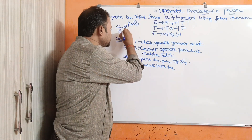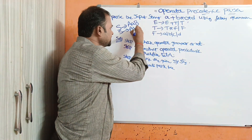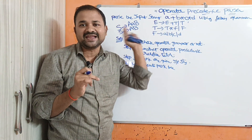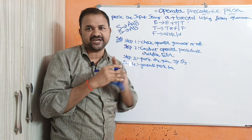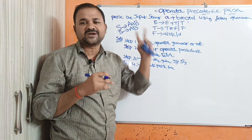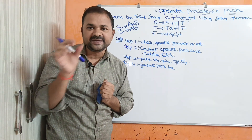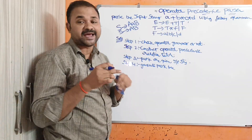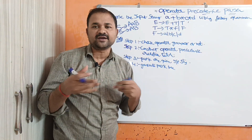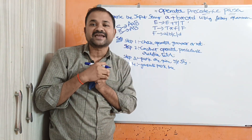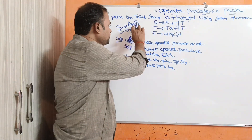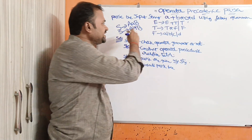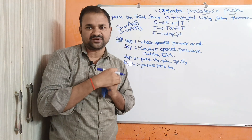However, if we have a production like S implies A B, that is not valid because operator grammar means two adjacent variables cannot be placed on the right hand side of the production. If you place plus here — A plus B — it becomes a valid production.